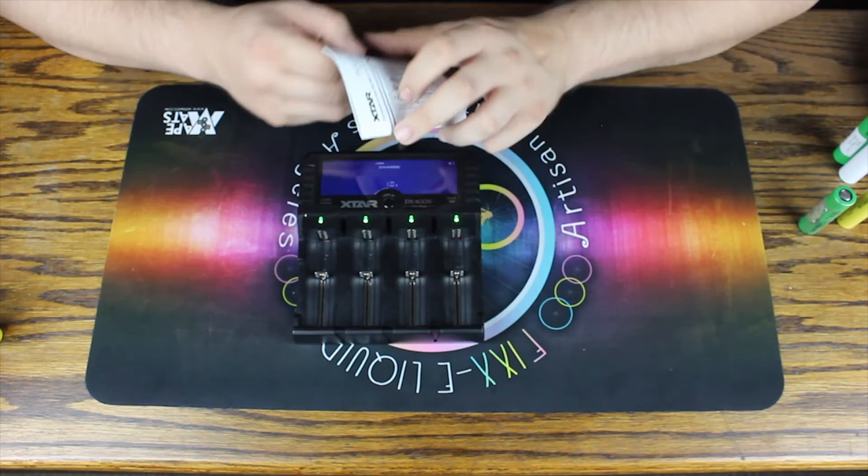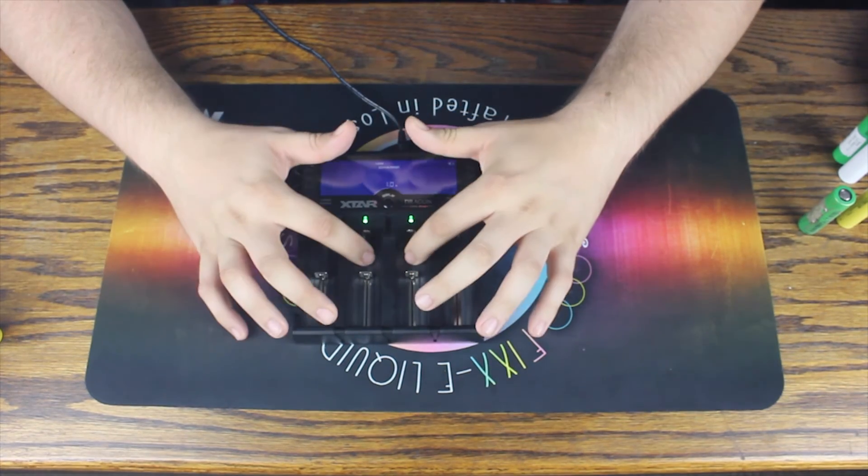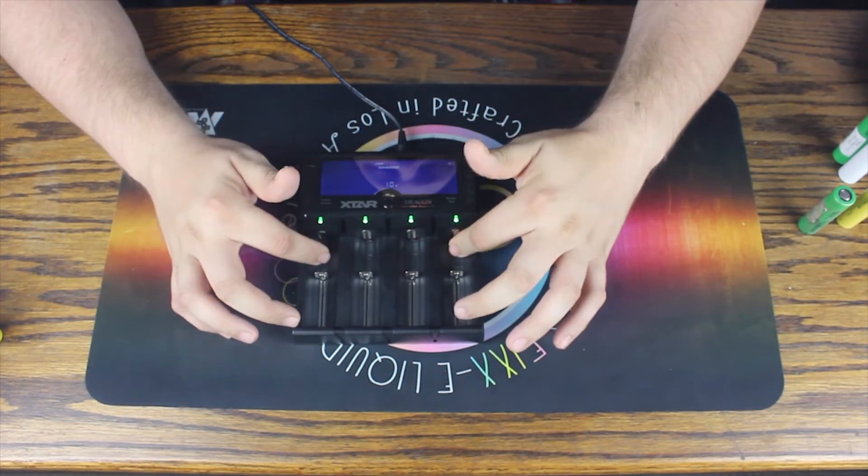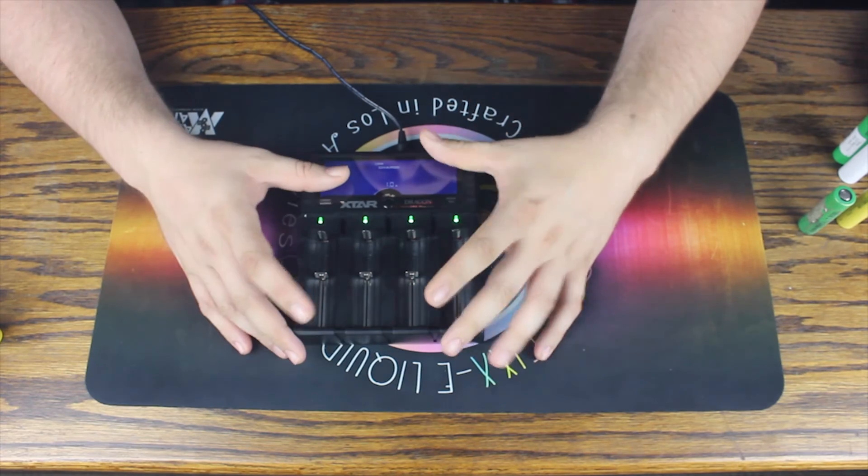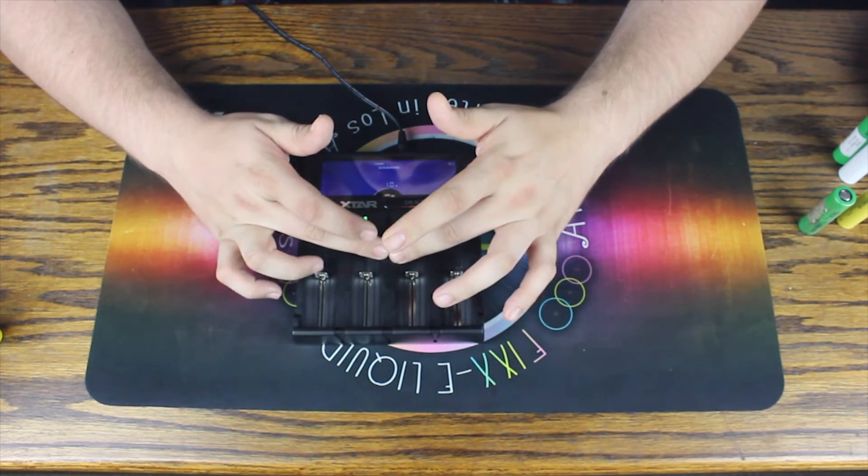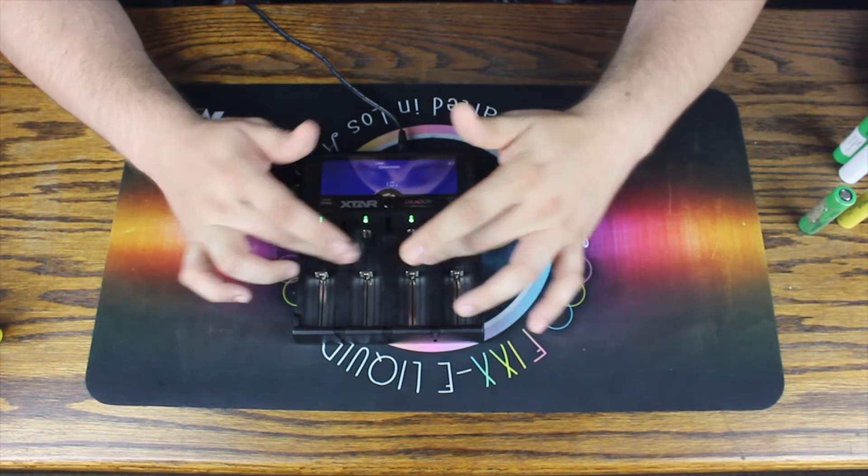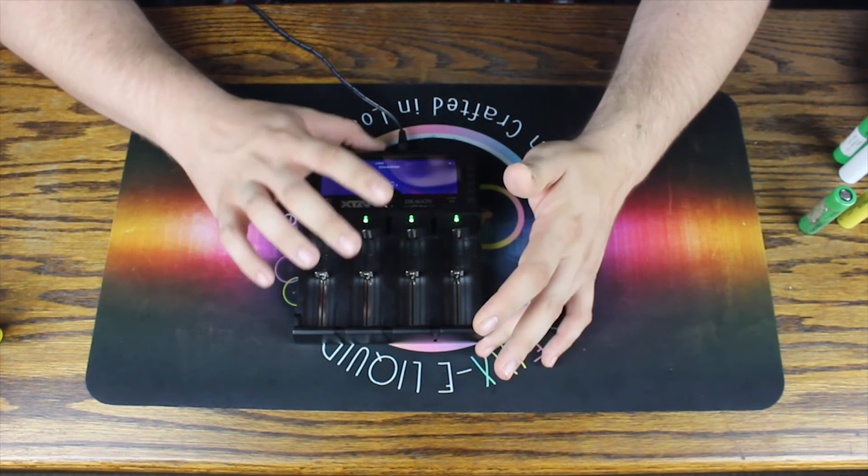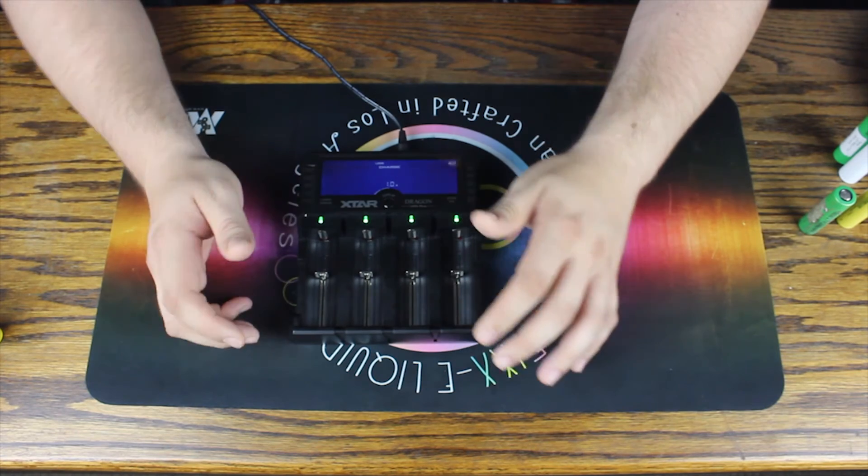This charger will do two amps from the inside two bays, and it'll do one amp across all four, so four total amps, only two amps across two bays. And you can also have four batteries on here, like I said earlier, and charge your phone out. Let's go ahead and take a look at the back of the charger now and we'll see what's going on back there.